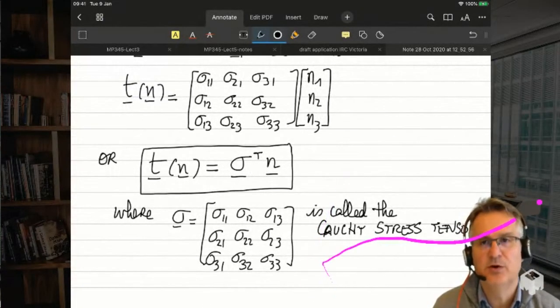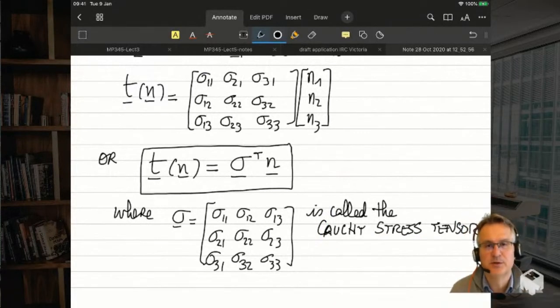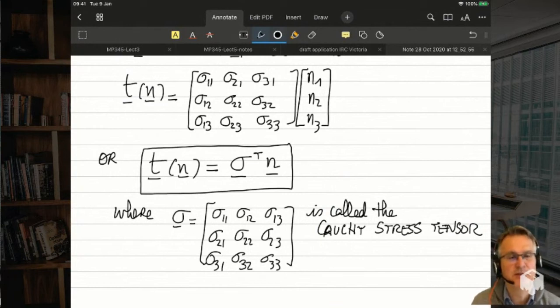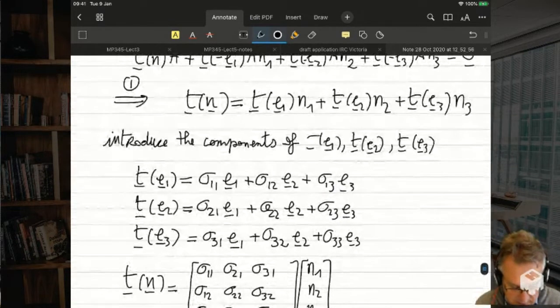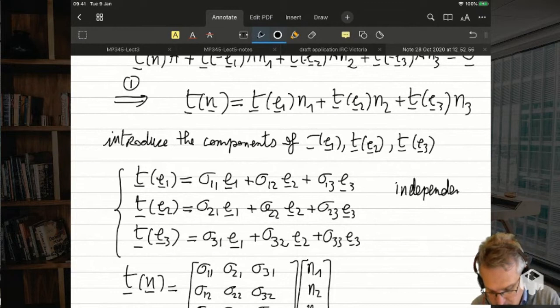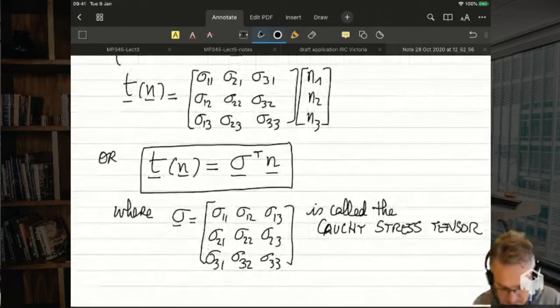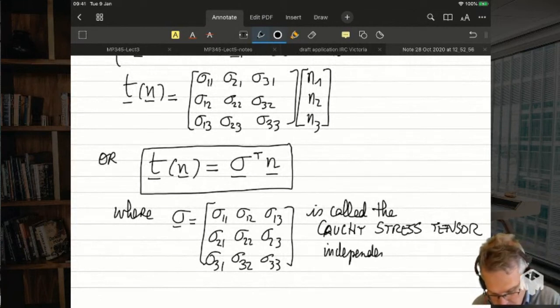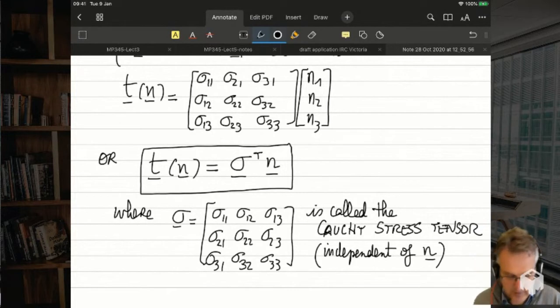Using the first consequence that t(-e1) is minus t(e1) and so on, I can bring everything to the right hand side and divide across by A. I'll end up with t(n) equals t(e1) n1 plus t(e2) n2 plus t(e3) n3. I just brought the second, third, and fourth terms to the right hand side, then flipped the sign because of the first consequence.